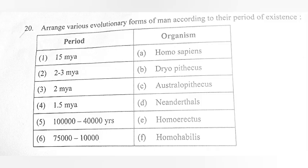Question 20. Arrange various evolutionary forms of man according to their period of existence. Answer: 1. 50 MYA — Dryopithecus. 2. 2 to 3 million years ago — Homo habilis. 3. 2 million years ago — Australopithecus. 4. 1.5 million years ago — Homo erectus. 5. 1 lakh to 40,000 years ago — Neanderthals. 6. 75,000 to 10,000 years ago — Homo sapiens.